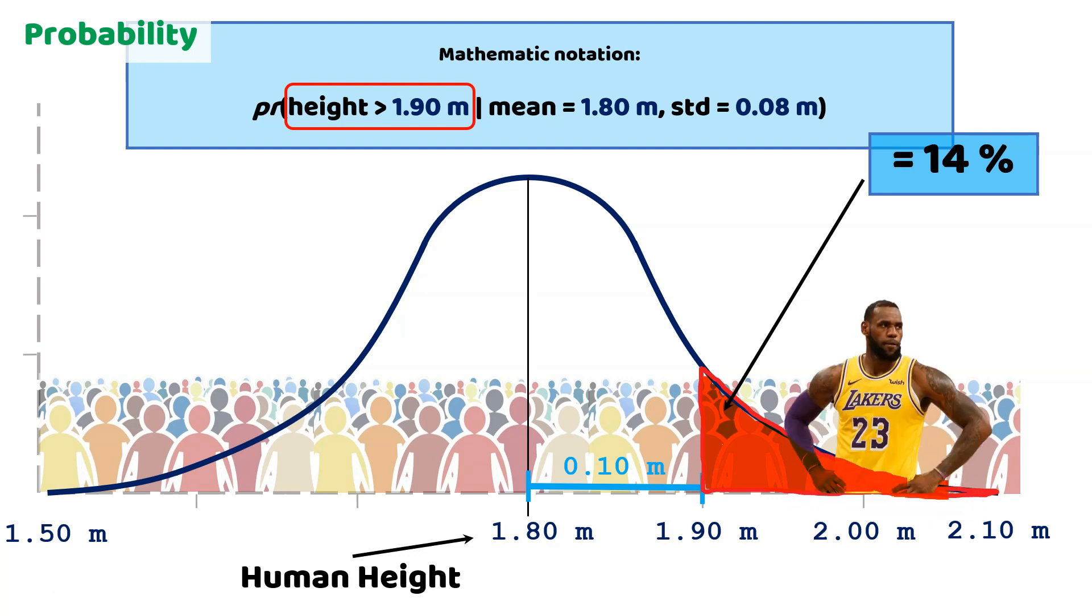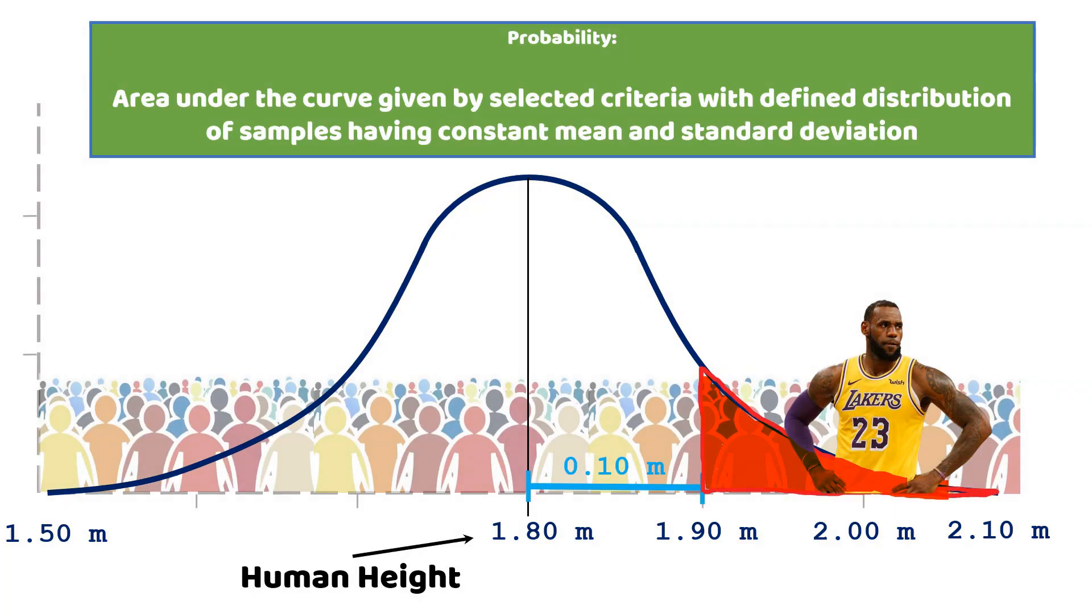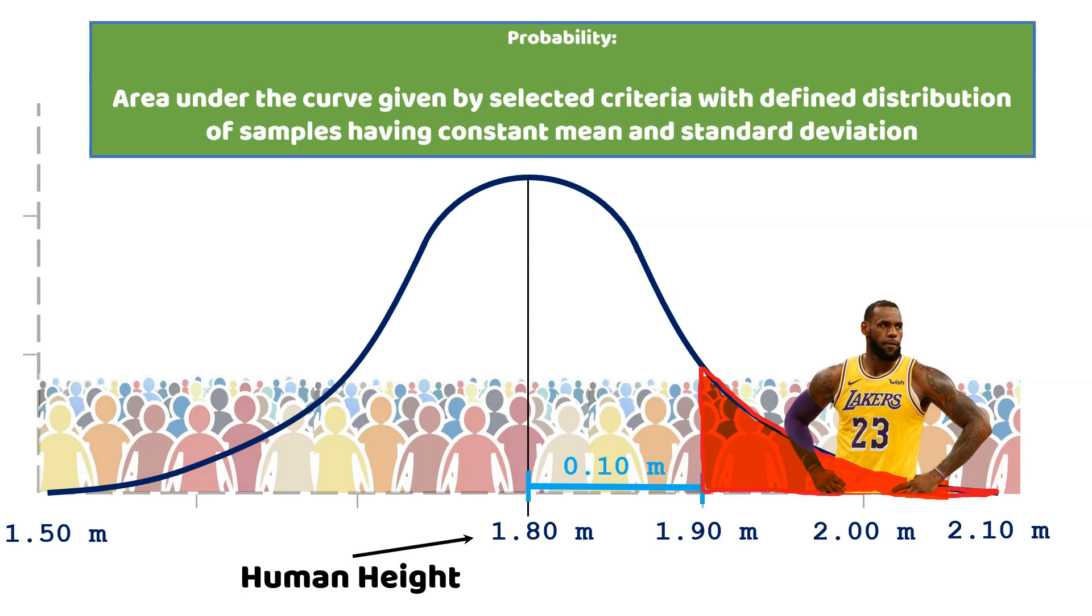This is a 0.14 area under the curve representing the height distribution. So, we can change the left side of the equation to change probability. What is probability? Probability is the area under the curve given by selected criteria with a defined distribution of samples having constant mean and standard deviation.